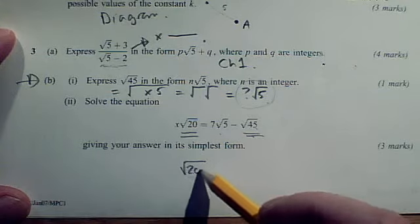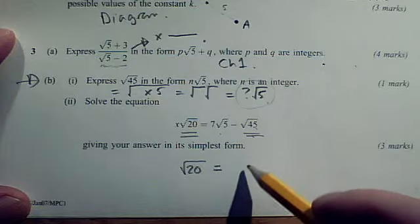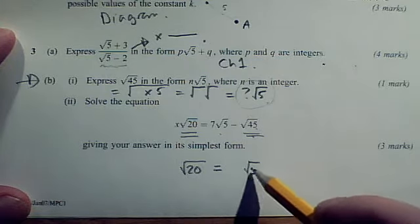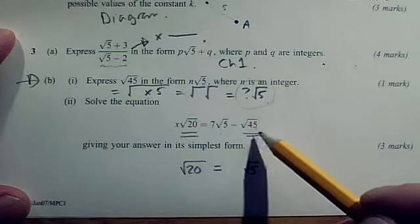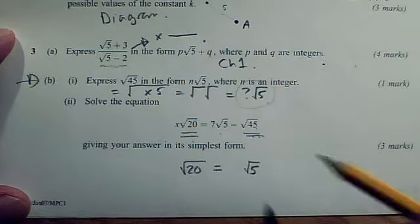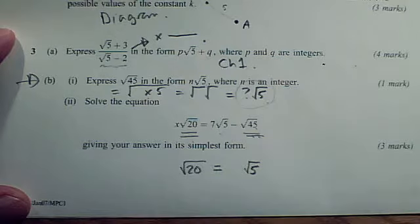Now, if you express root 20 as a simplified surd, then once again it's got root 5 in it. So if you simplify the root 20 as well as the root 45, you should be well on your way to finding the correct value for x.